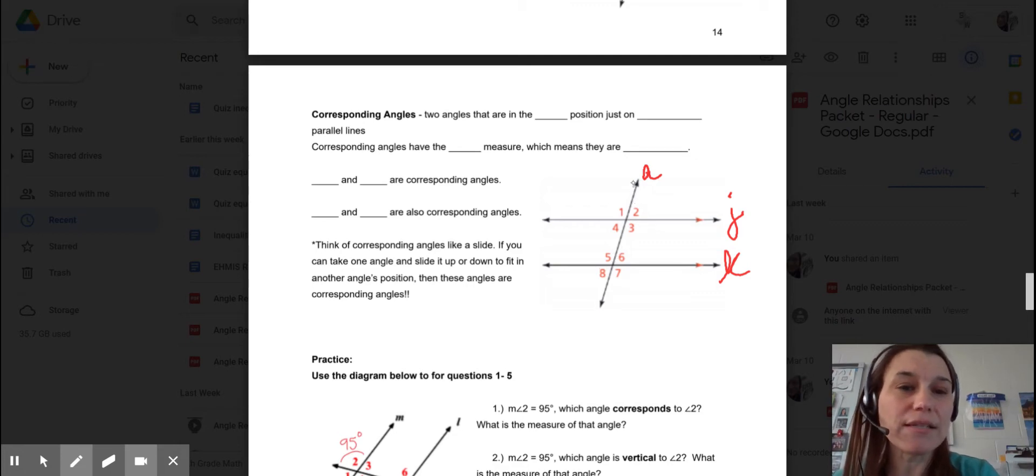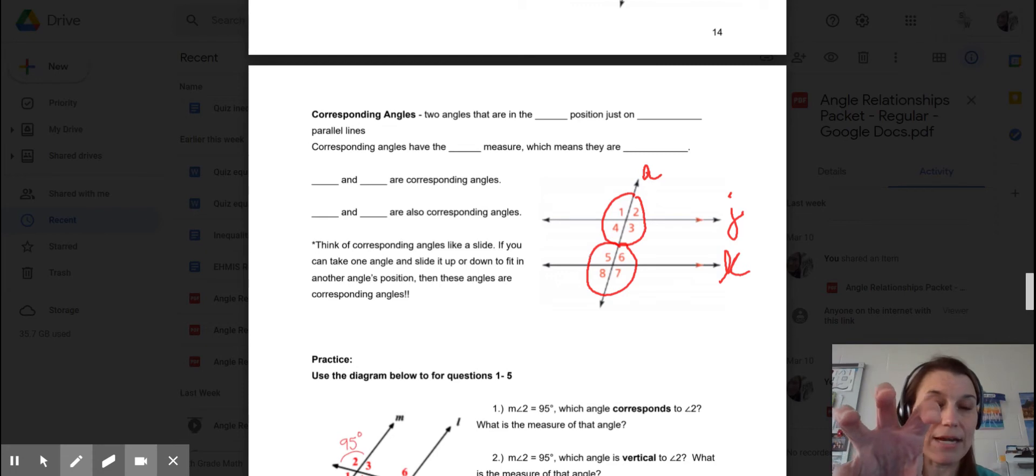If I notice, these angles up here, 1, 2, 3, and 4, are identical to the angles here 5, 6, 7, and 8. And they're the same. Like I could pick up 1, 2, 3, and 4 and put it on top of 5, 6, 7, and 8, and they would be the same angles.